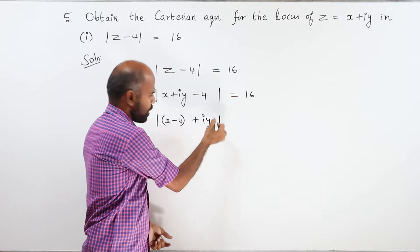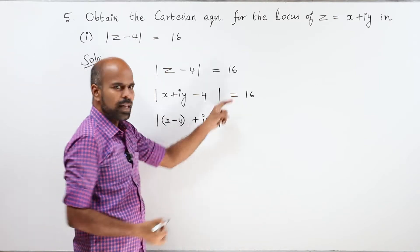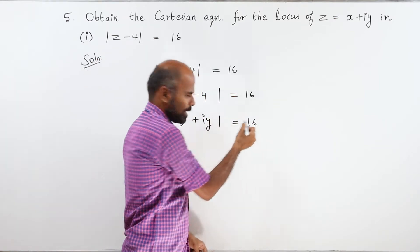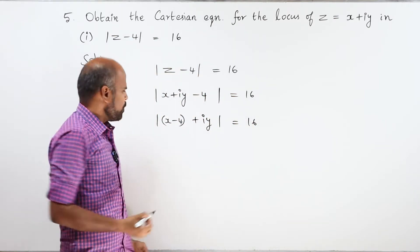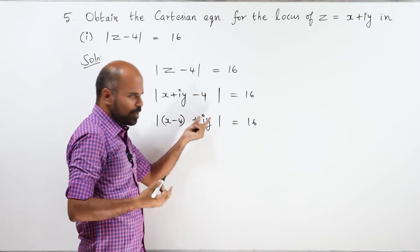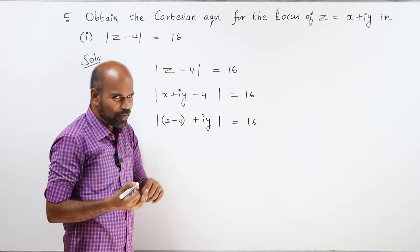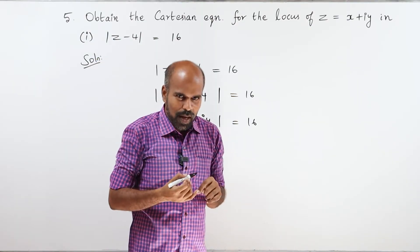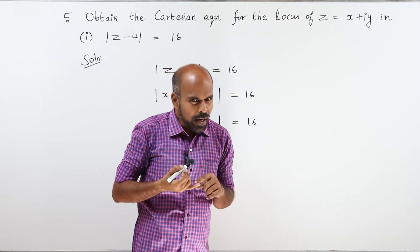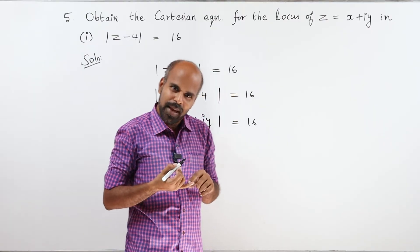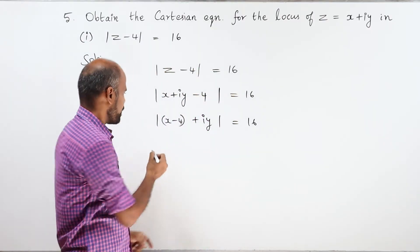So x minus 4 plus iy is equal to 16. Now, the standard formula for modulus of a plus ib is: root over real part squared plus imaginary part squared.